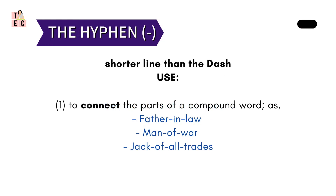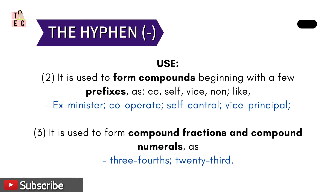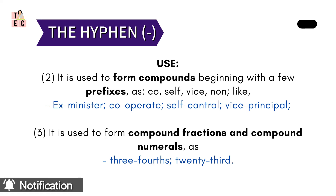Then comes the hyphen. Hyphen is a shorter line than the dash. It is used to connect the parts of a compound word, such as father-in-law, man-of-war, jack-of-all-trades, etc. It is also used to form compound beginnings with a few prefixes such as ex-, co-, self-, wise-, non- — for example, ex-minister, co-operate, self-control, etc. Next, it is used to form compound fractions and compound numerals such as three-fourth, twenty-third, and many more.